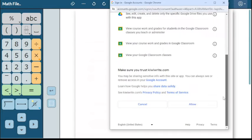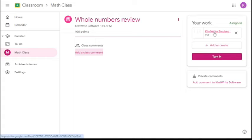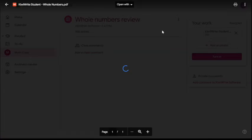Within Google, click on Open with, and then select Open with KiwiWrite math. Your file will be opened in a new tab.